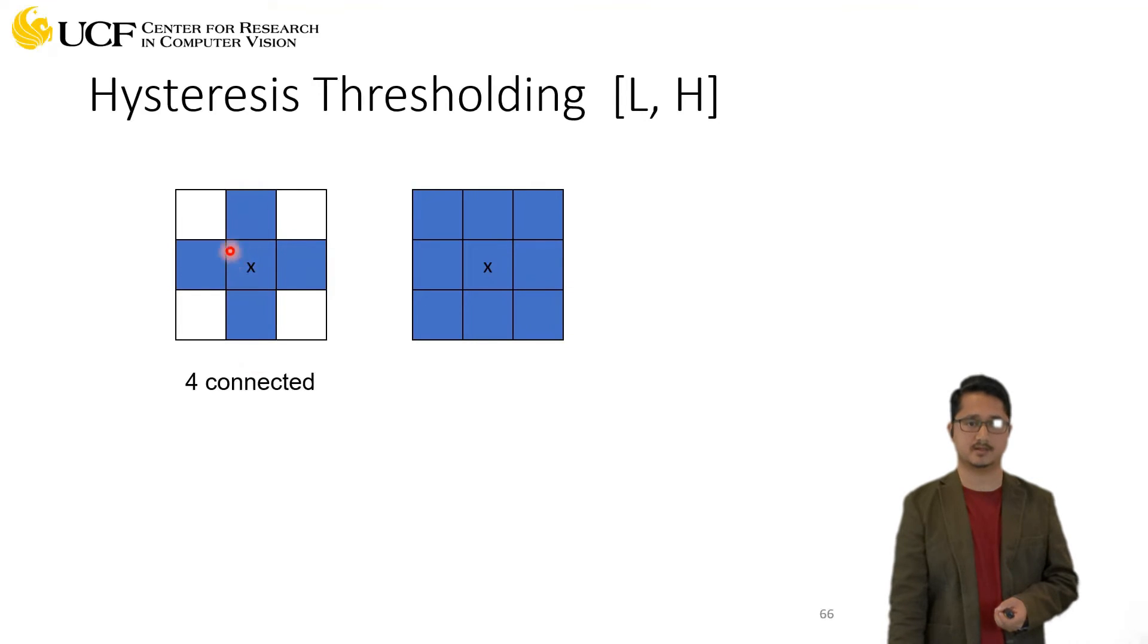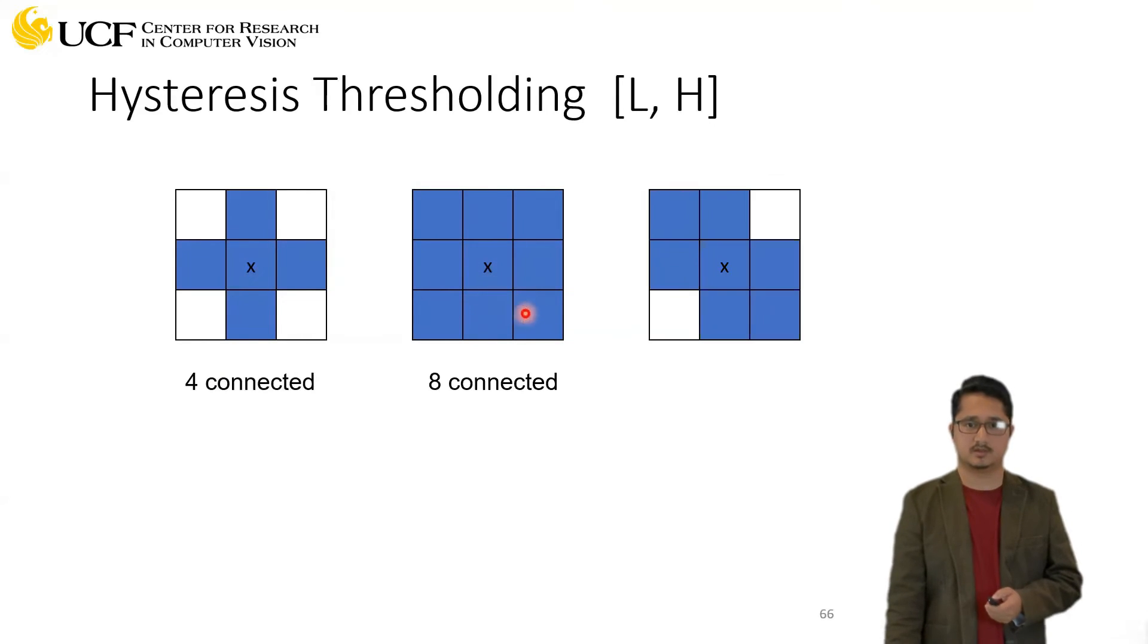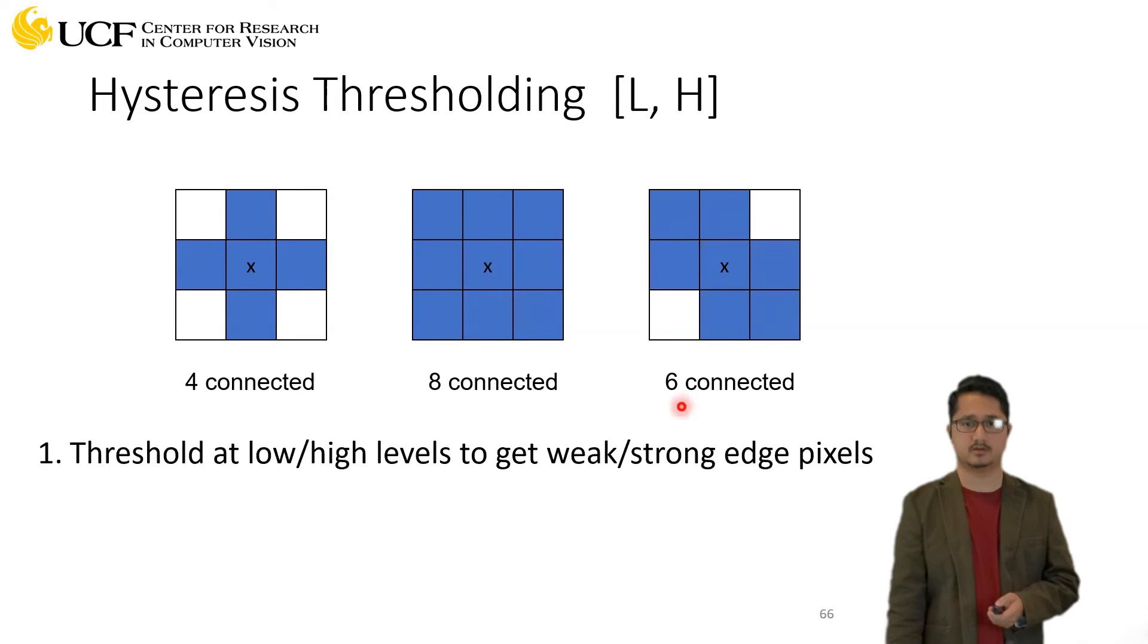This is four-connectedness. We also have eight-connectedness. We have to do this because we have a discrete space - it's not continuous. We can have other variants like maybe in the diagonal or other diagonal, which is fine.